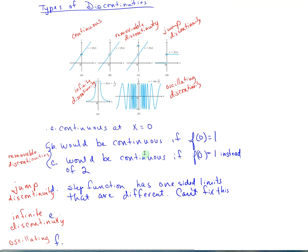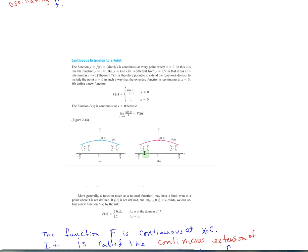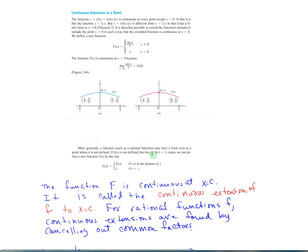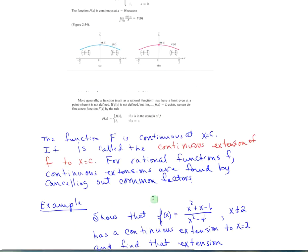Continuous extension to a point. The function f is continuous at c. It is called the continuous extension of f to x equals c. Typically, we think of this with a rational function. For a rational function f, continuous extensions are found by canceling common factors.